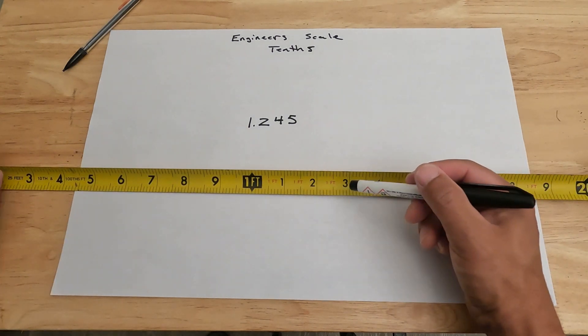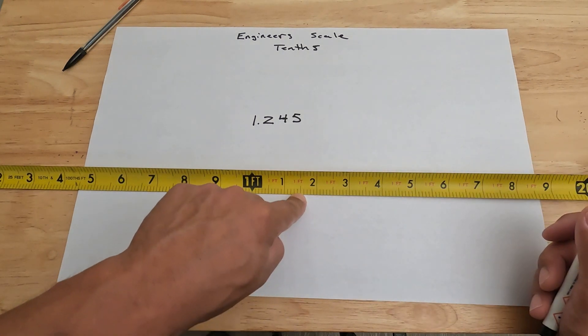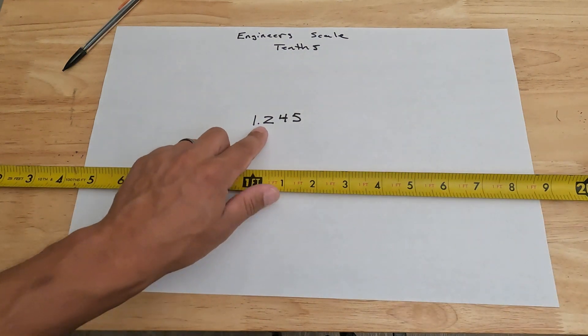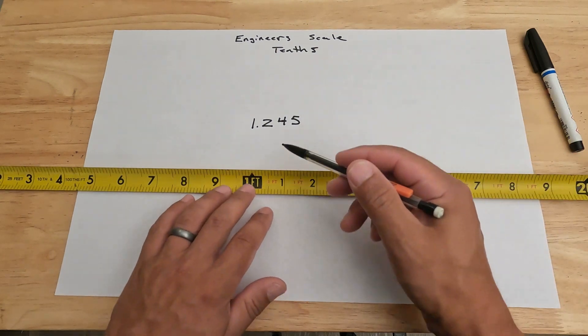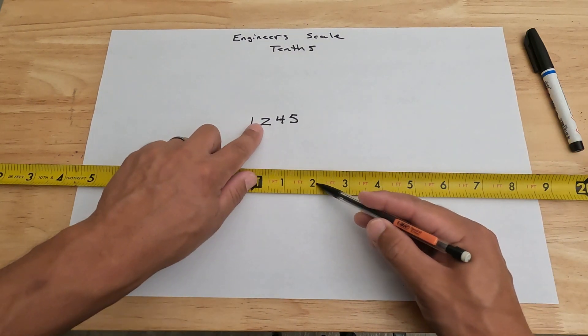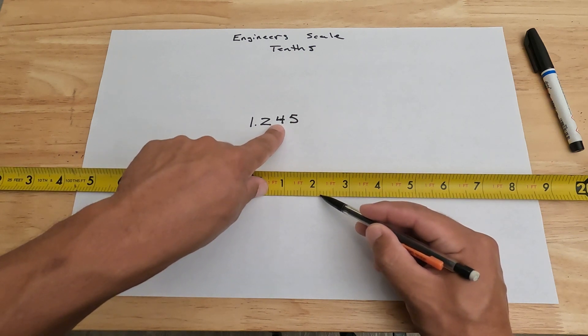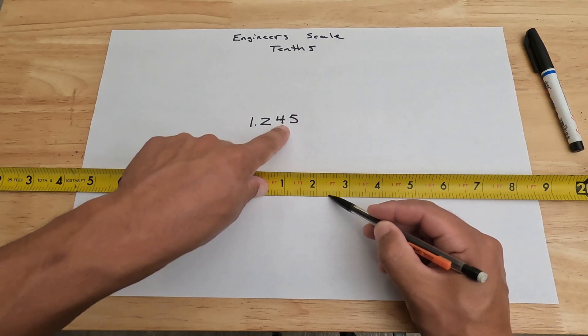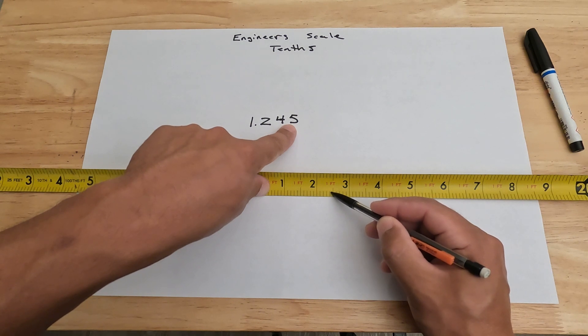Now when it comes to reading this tape measure in particular, you're really only going to be able to split a hundredth in half accurately, so you're really only going to be able to read down to five thousandths. When it comes to 1.245, we'll just find it on the tape: one point two, and then we have four tick marks, four hundredths, so we would count one, two, three, four, and then we have our five thousandths. So that would be right here. That would be 1.245.